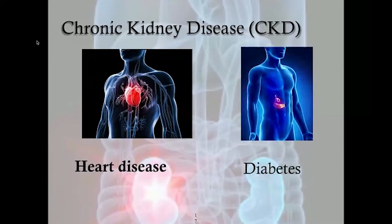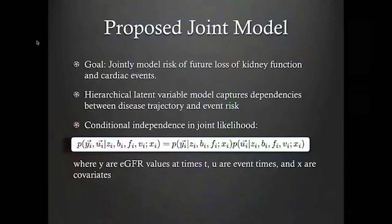Another thing we looked at: if you have chronic kidney disease, you can also have other things go wrong — for example, a heart attack or stroke. We'd like to predict whether you're going to have one of these adverse events together with the course of your chronic kidney disease. We used a conditionally independent model, keeping the Gaussian process model from before but also adding a point process model for bad events like heart attacks or strokes.